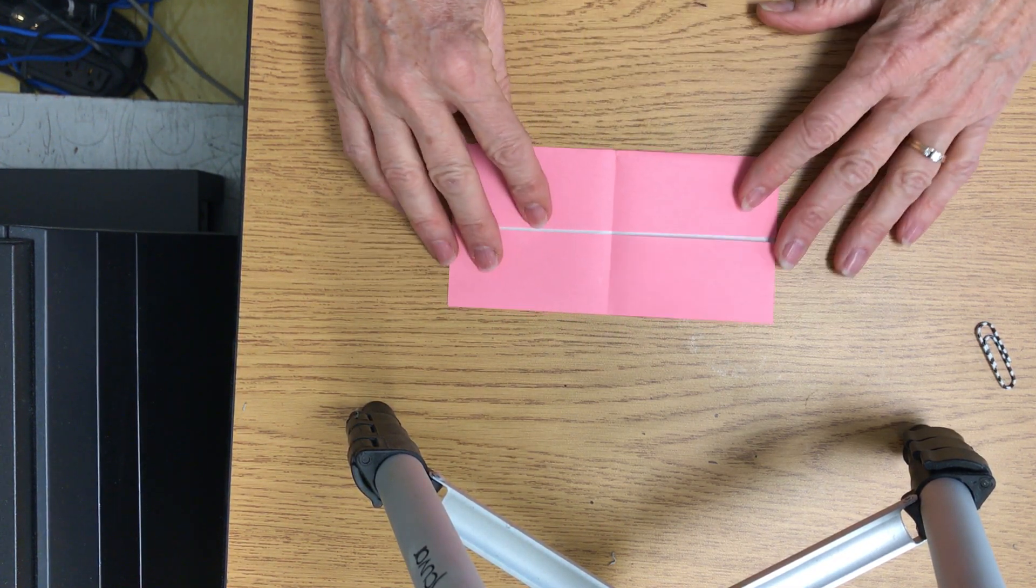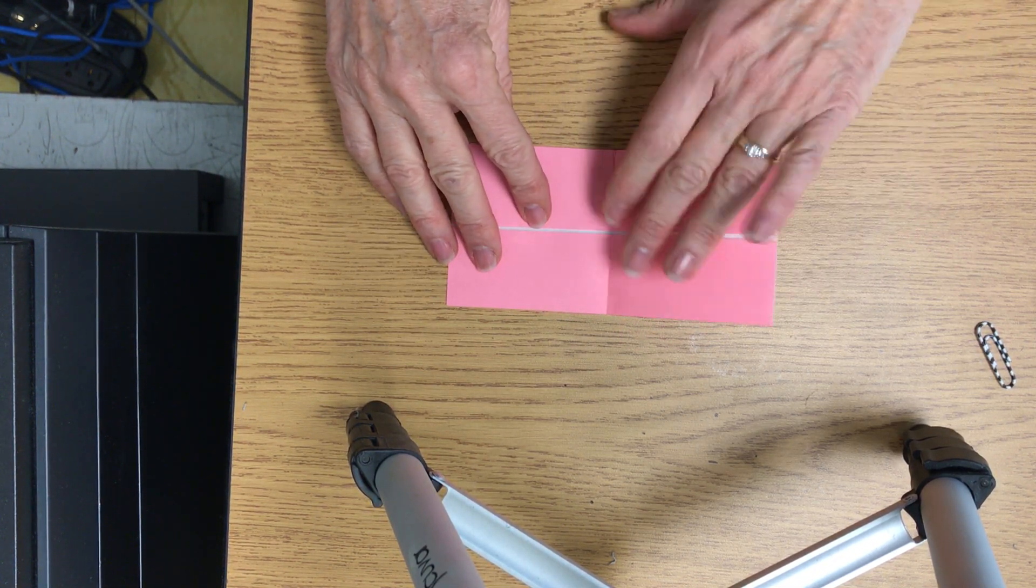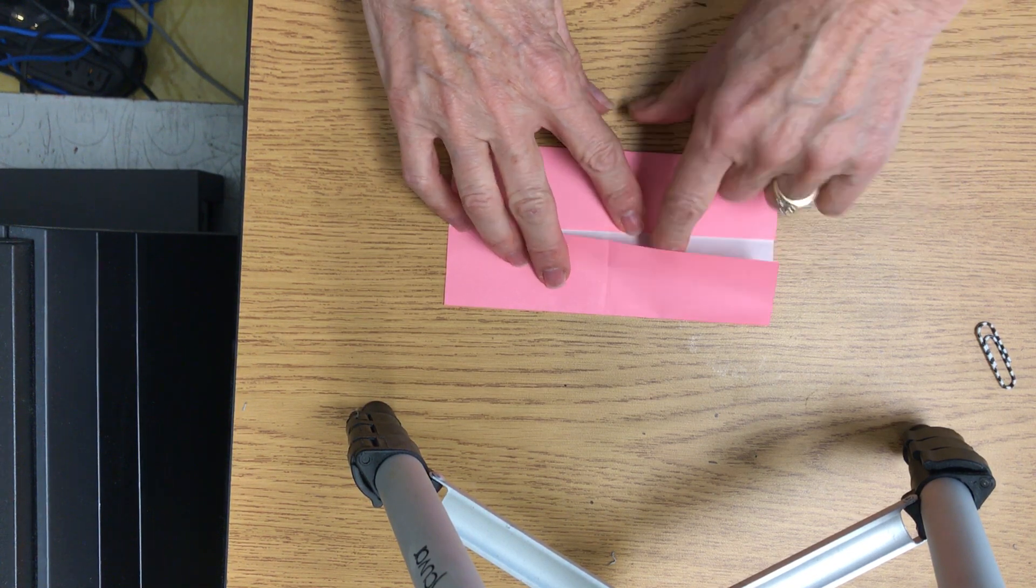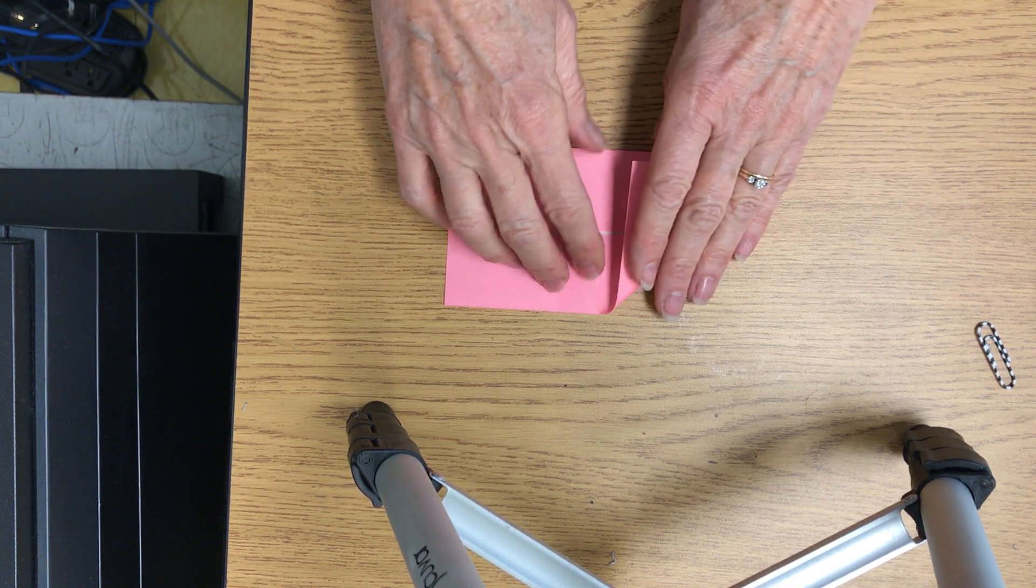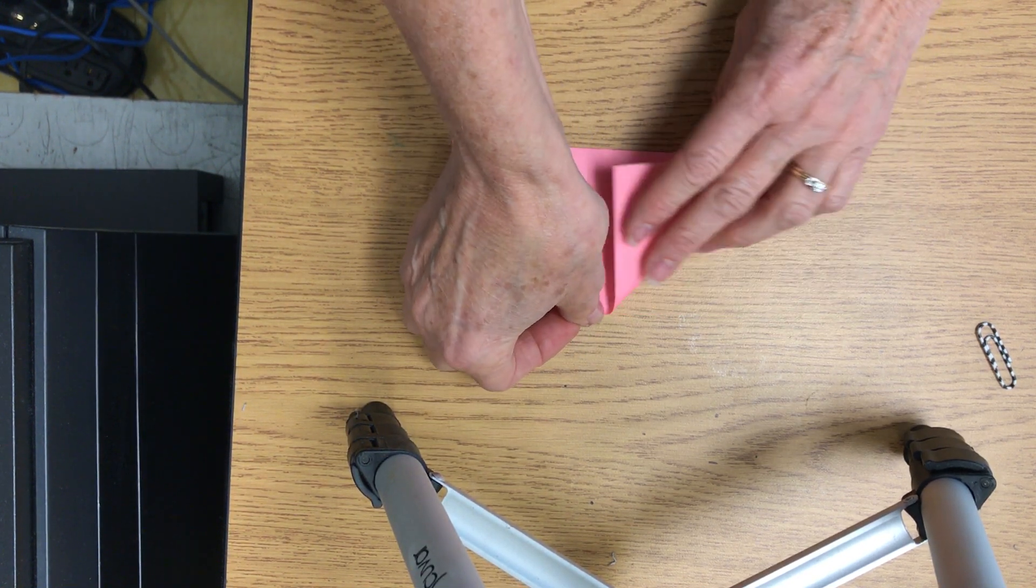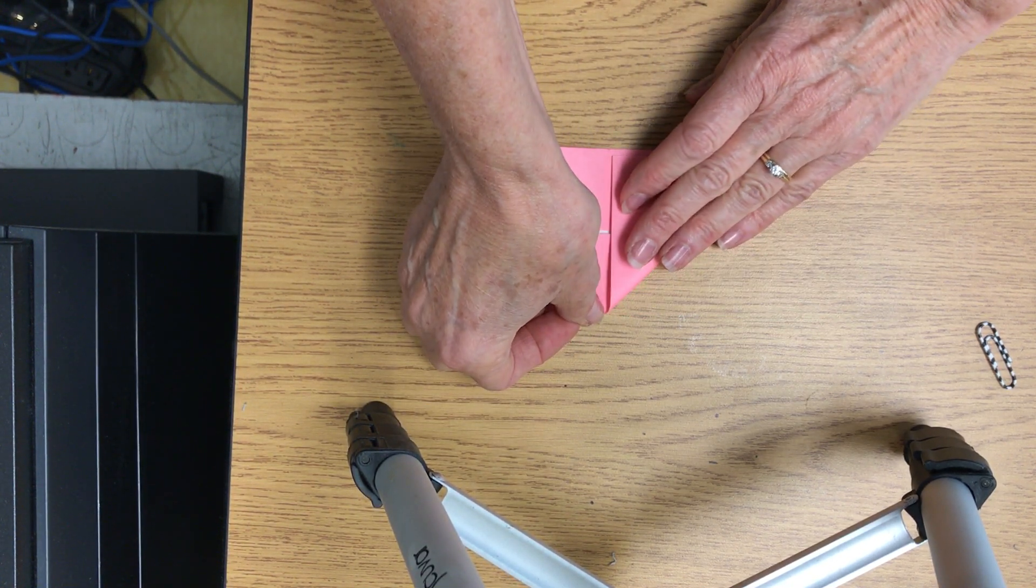Now we're going to open it back up again, and we're going to fold our corners down. So we're going to take this corner here and fold it in. Now we want to fold it right along there.